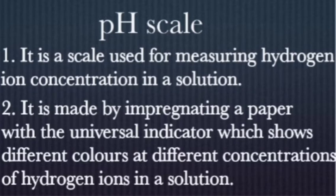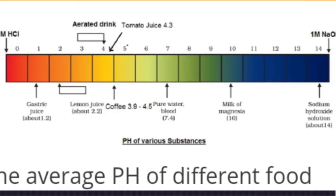To check pH, we use a special indicator called a universal indicator, made by mixing all different types of indicators together. This is used to make pH paper — similar to litmus paper. The pH paper is made by impregnating paper with a universal indicator that shows different colors at different concentrations of hydrogen ions. With this paper you can determine the pH of a given solution.